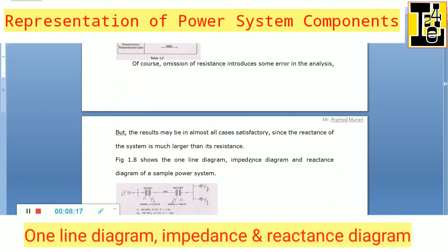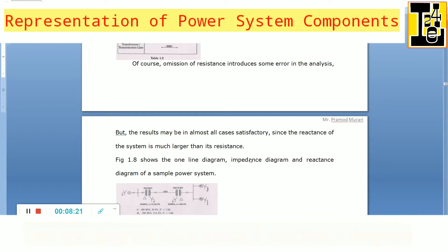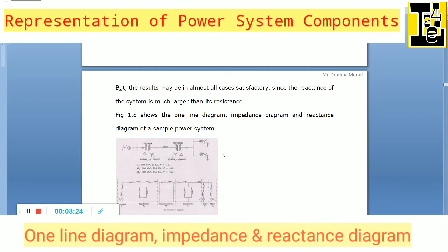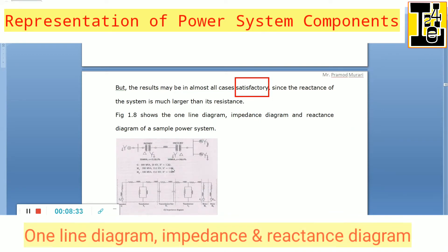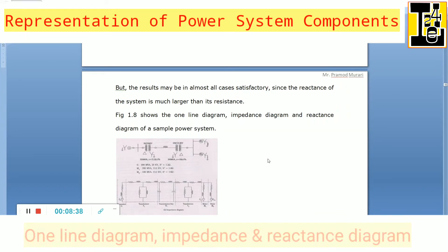The omission of resistance introduces some error in the analysis, but the results are almost satisfactory since the reactance of the system is much larger than its resistance. Therefore, we can omit the resistances and perform analysis of the power system based on the reactance diagrams.